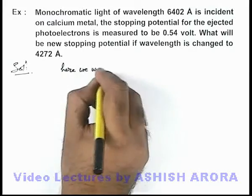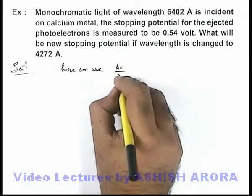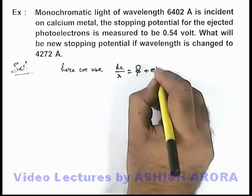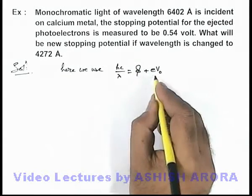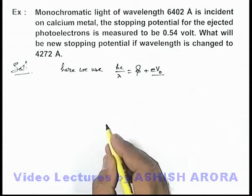Here we use hc by lambda is equal to φ plus eV₀. Here this is the incident energy, φ the work function, and eV₀ is the maximum kinetic energy of ejected electrons.